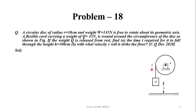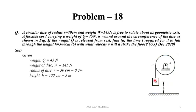Given: weight of the disk is 145 N, the weight Q equals 45 N, radius of the disk R is 30 cm, that is 0.3 m, and height is 300 cm, that is equal to 3 m.